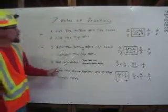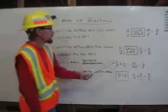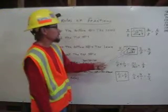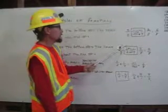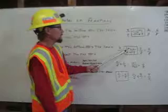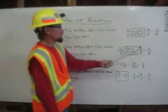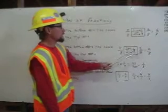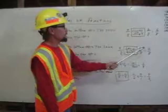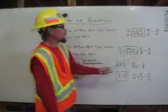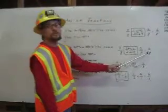Subtraction: get the bottom numbers the same, subtract the top numbers. One-half minus one-fourth. Four times one equals four, four times two equals eight. Two times one is two, and two times four is eight. Subtract: four take away two equals two. Bring the eight over. One-half take away one-fourth equals two-eighths.